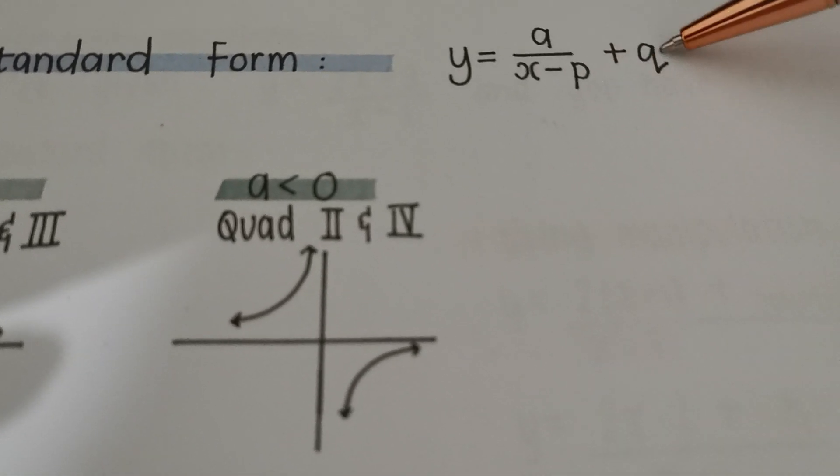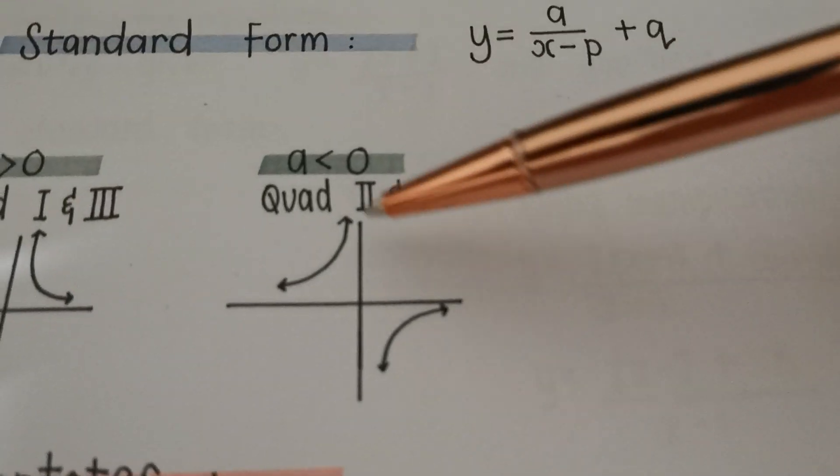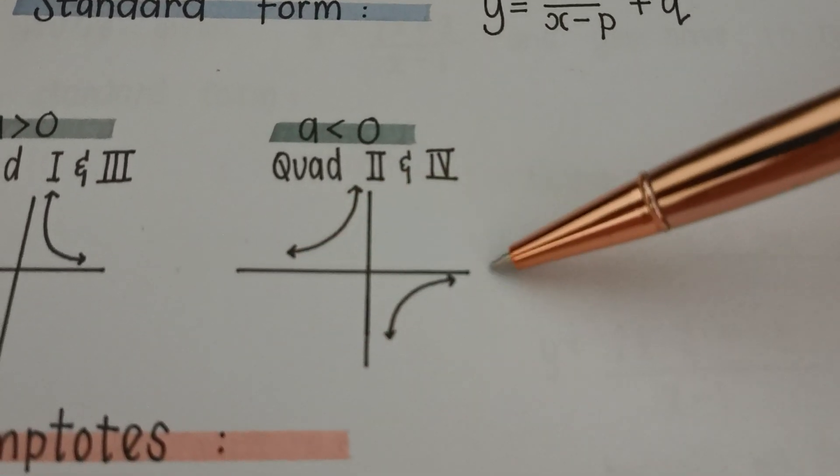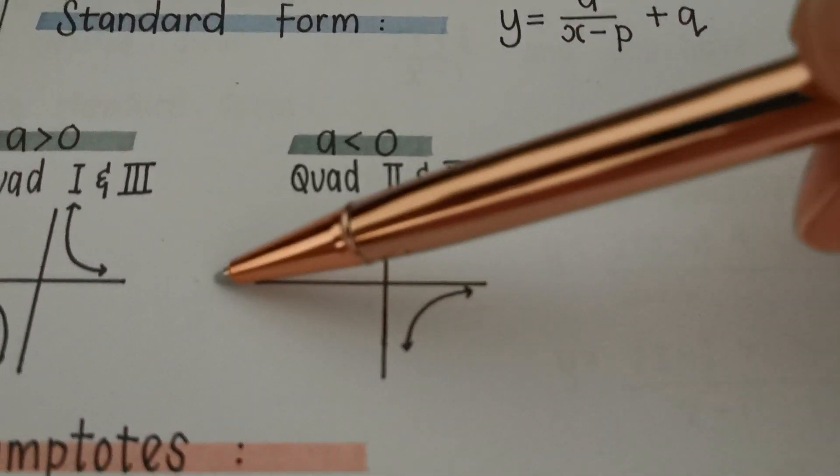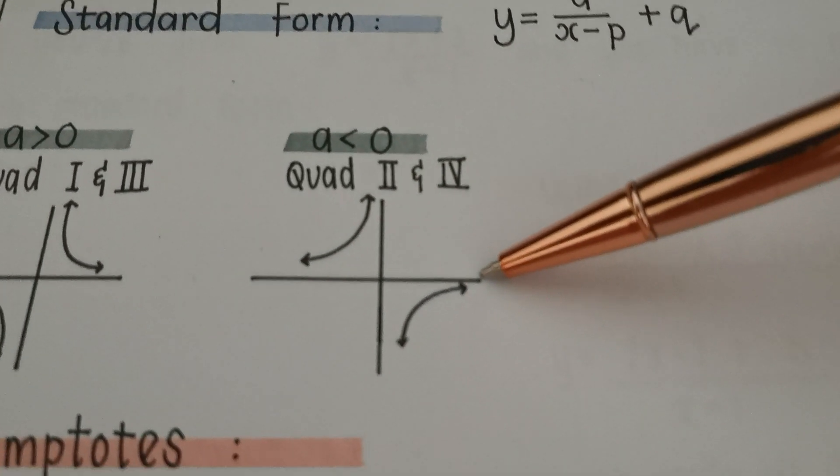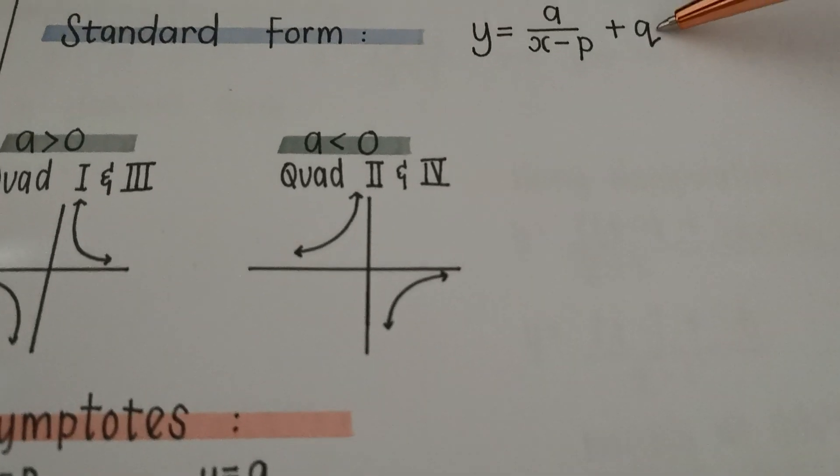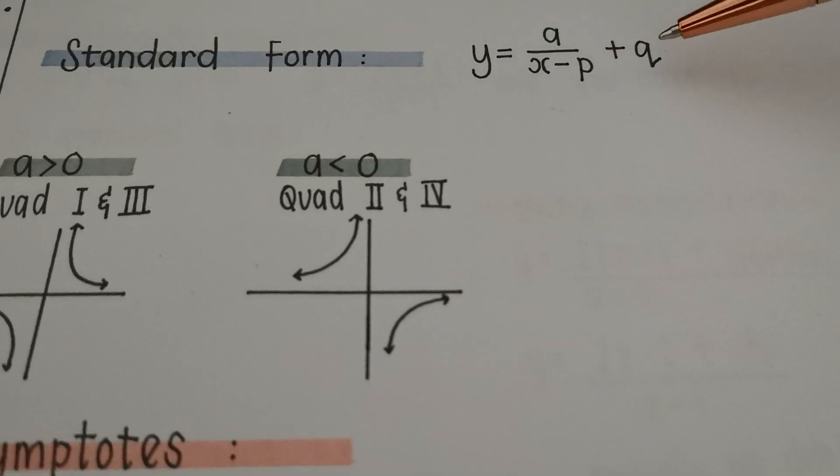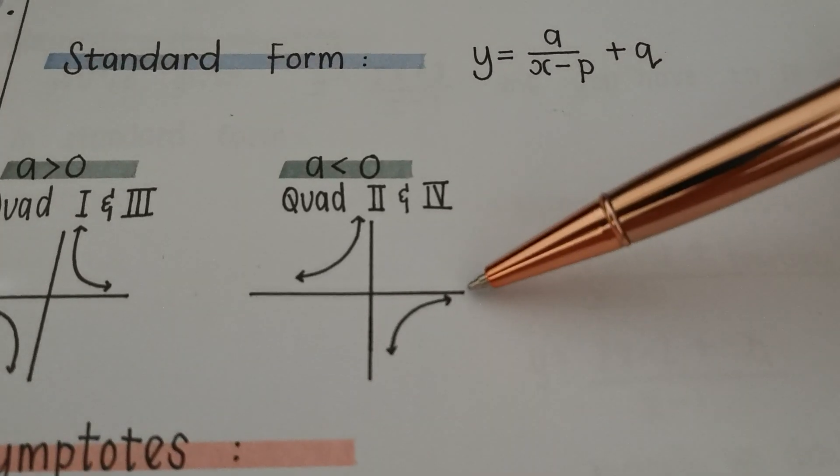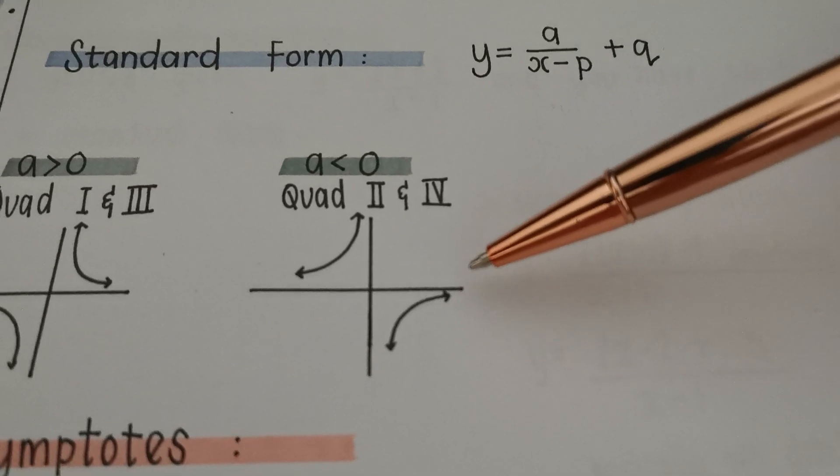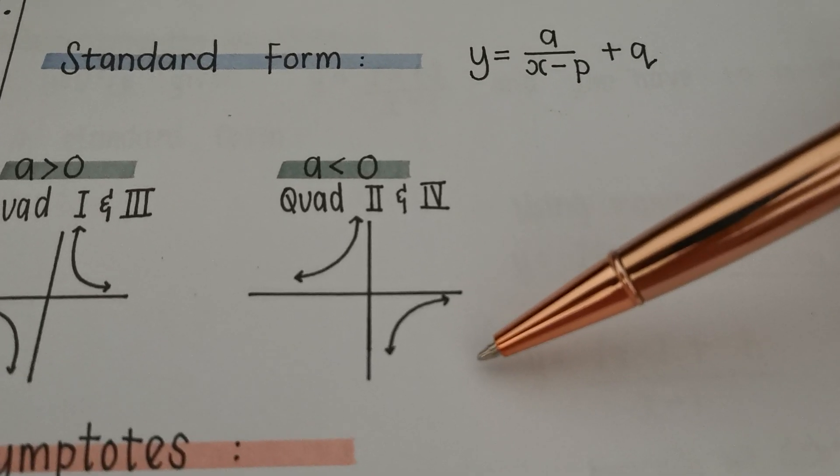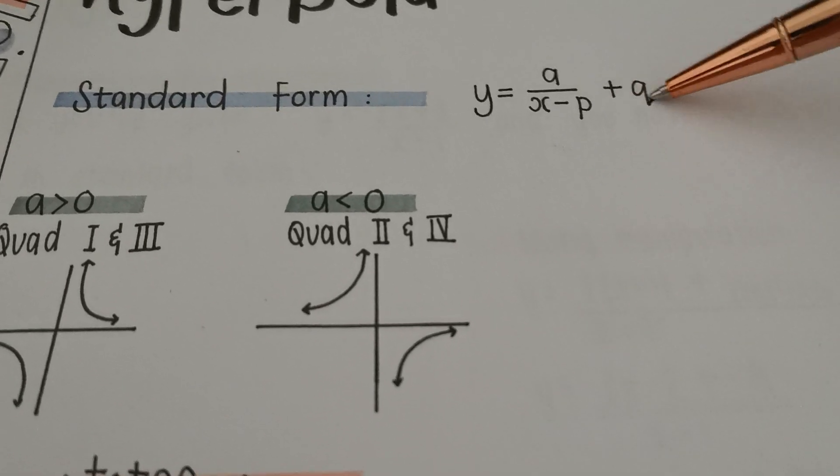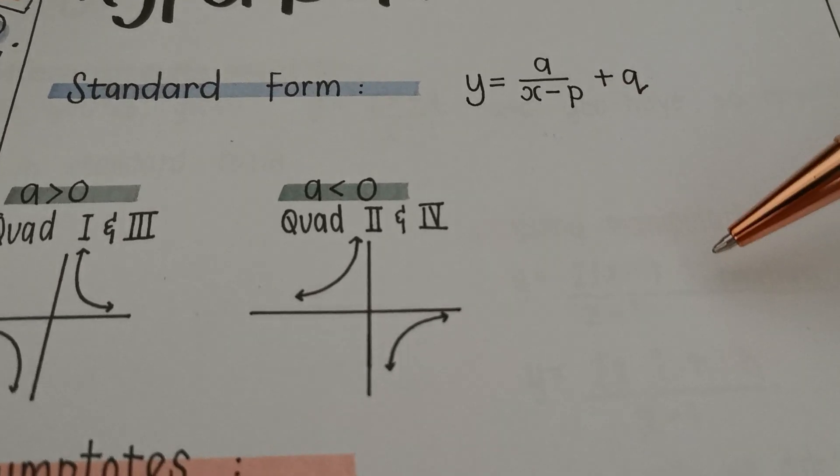It also tells us about shifting the graph up and down because the original graph has an asymptote on the y-axis and an asymptote on the x-axis. So this here, this line over here is y equals 0. If this value here is 2, it means that this asymptote shifted up 2 units. If this asymptote here is negative 2, it means this asymptote shifted down 2 units, meaning that our whole entire graph also shifted up and down accordingly. So just remember, this q-value over here, asymptote, and shifts the graph up and down.